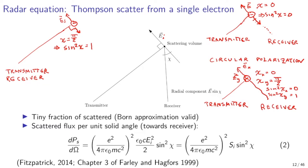Let us now investigate the scattering of electromagnetic waves by electrons in the volume of plasma illuminated by the radar transmitter. Because electrons in ionospheric plasma interact weakly with electromagnetic waves at frequencies used for incoherent scatter radar, only a small fraction of the incident power is scattered. We can therefore ignore multiple scattering and assume that incident power is constant throughout the scattering volume — this is known as the Born approximation. If we investigate scattering from individual electrons, ignoring collective interactions, the scattering is described by Thomson scatter.